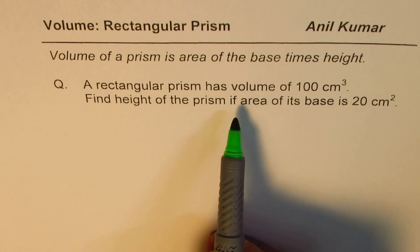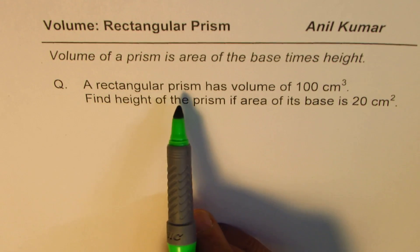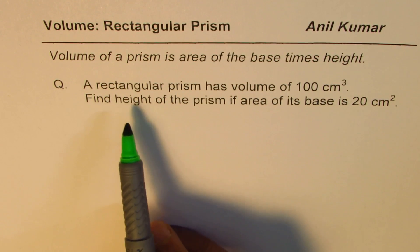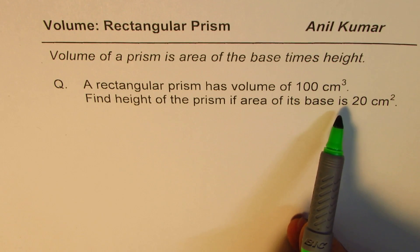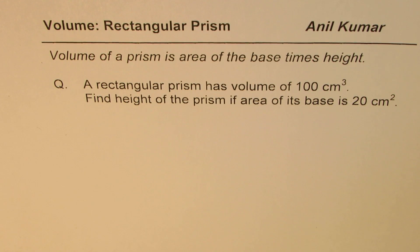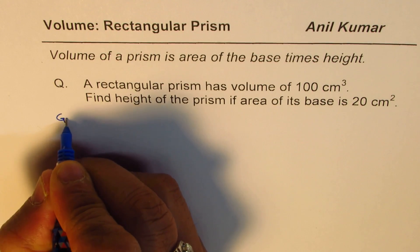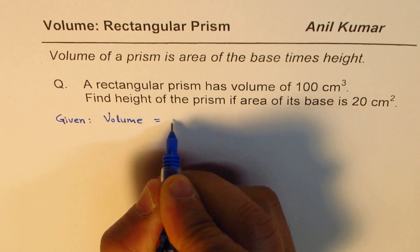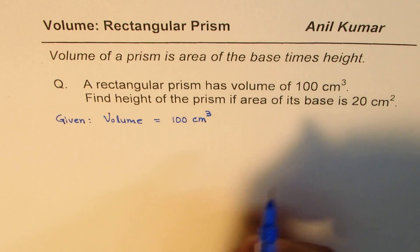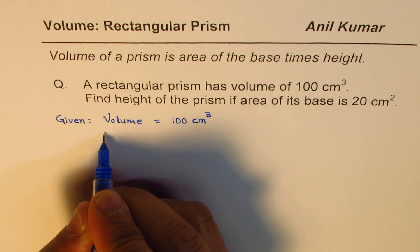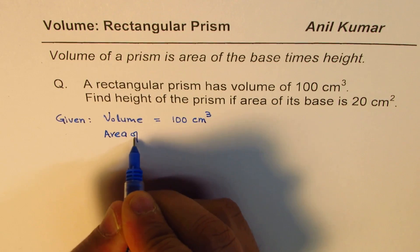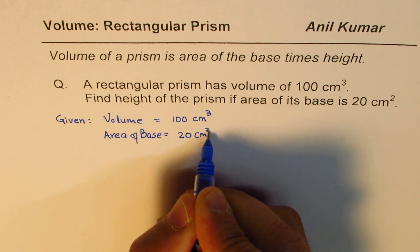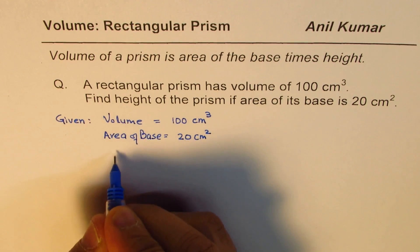Let's try to understand the question. What we are given is that a rectangular prism has a volume of 100 cm cubed. Volume is given to us. We need to find the height of the prism if the area of its base is 20 cm squared. So what is given to us are two things: we are given volume which is 100 cm cubed, and we are given area of base which is 20 cm squared. What we need to find is height.